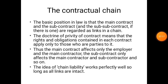The next topic is the contractual chain. The basic position in law is that a main contract and a subcontract, if there is one, are regarded as links in a chain. The doctrine of privity of contract means that the rights and obligations contained in each contract apply only to those who are parties to it. The main contract affects only the employer and the main contractor, and a subcontract only affects the main contractor and subcontractor. If the main contractor is affected by any problem or situation, this effect is totally transferred to the subcontract.